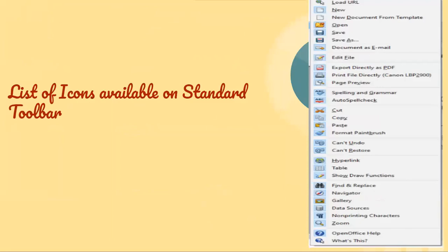This is the list of all the icons on the standard toolbar. The icons include: New, New Document from Template, Open, Save, Save As, Document as Email, Edit File, Export Directly as PDF, Print File Directly, Page Preview, Spelling and Grammar, Auto Spell Check, Cut, Copy, Paste, Format Paintbrush, Undo, Redo, Hyperlink, Table, Show Draw Functions, Find and Replace, Navigator, Gallery, Data Sources, Non-Printing Characters, and Zoom.